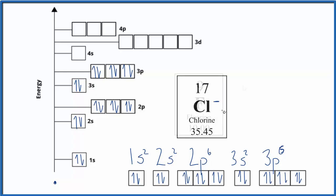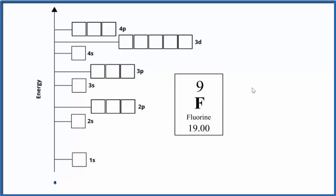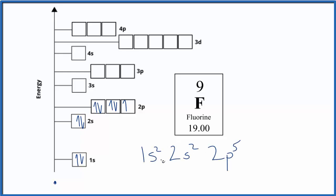Pause and give this one a try — write the orbital filling diagram for fluorine. For fluorine, the atomic number is 9, meaning 9 protons, and because it's neutral, 9 electrons. Let's spread them out: 1s², 2s² — we've used 4, we need 5 more — so we spread them out and then pair them up. This is the orbital diagram for fluorine. The electron configuration is 1s² 2s² 2p⁵.